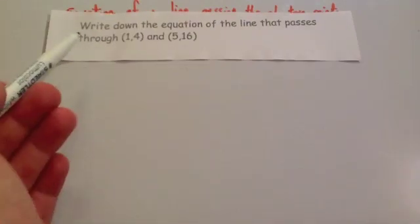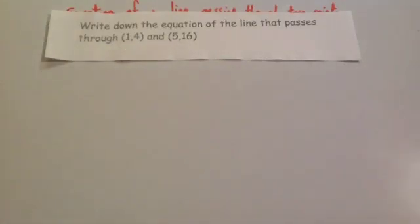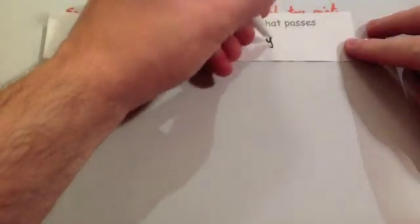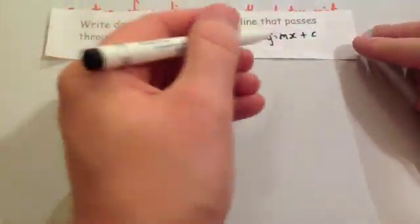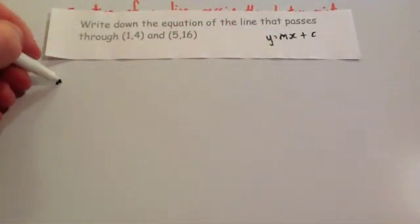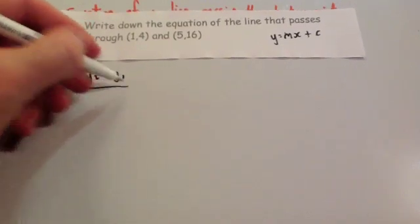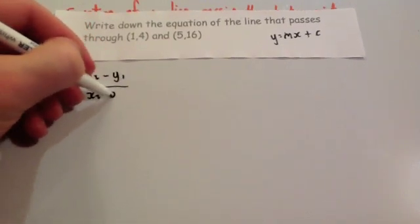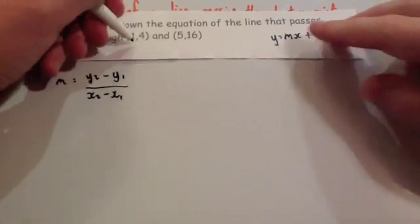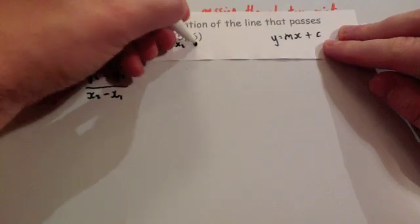So here's another example. It says write down the equation of the line that passes through (1,4) and (5,16). So again, it comes in the format y equals mx plus c. So we need the gradient, and we need the y-intercept. So for the gradient, we're going to use m equals y2 minus y1 over x2 minus x1. So this is x1, y1, x2, y2.